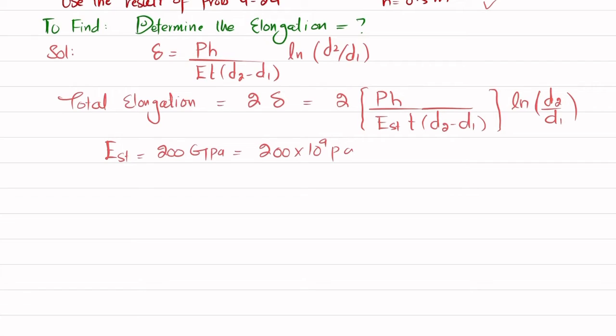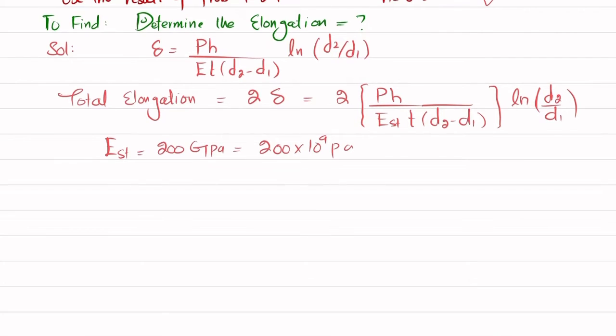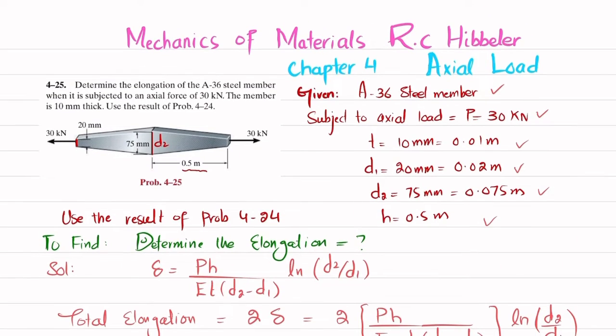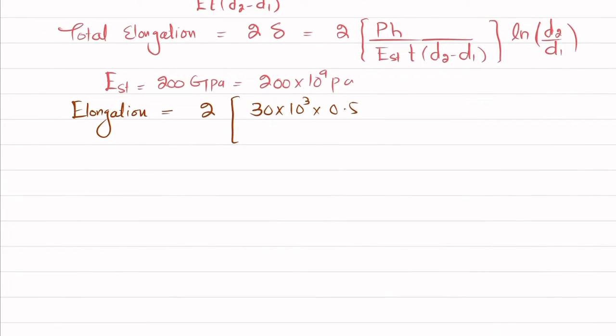Now you have all the values, you can just put them. Our total elongation will be equal to 2 times 30 times 10^3 times 0.5 divided by 200 times 10^9 times 0.01 times (0.075 minus 0.02) times ln of (0.075 divided by 0.02).